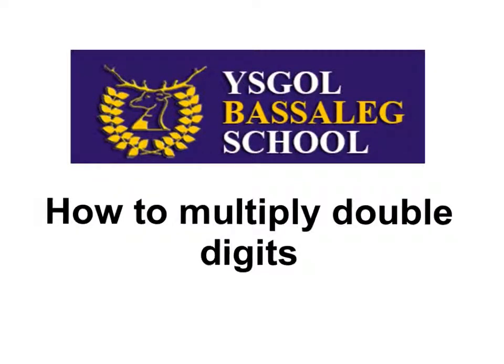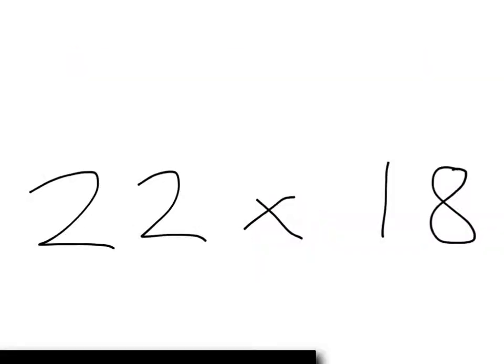This is a Bayes Egg School video explaining how to multiply double digit numbers. When it comes to multiplications like 22 times by 18, we're going to partition these numbers so that you look at its tens and its units and you split them up.